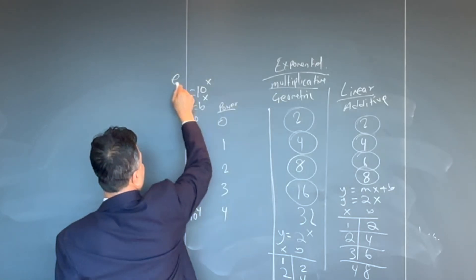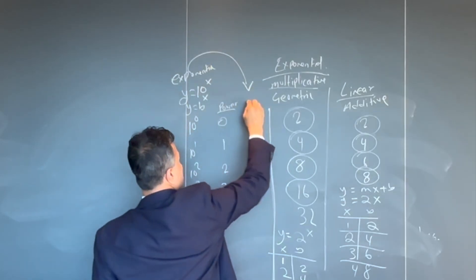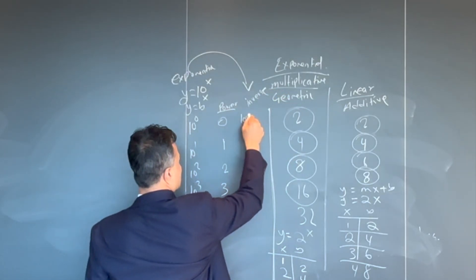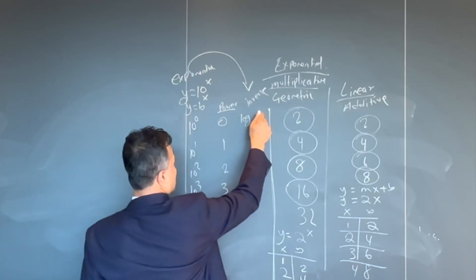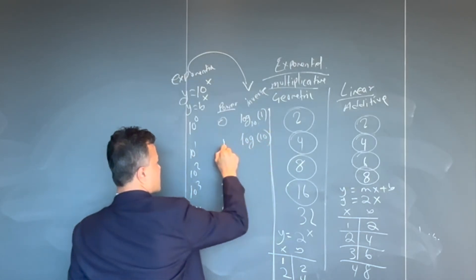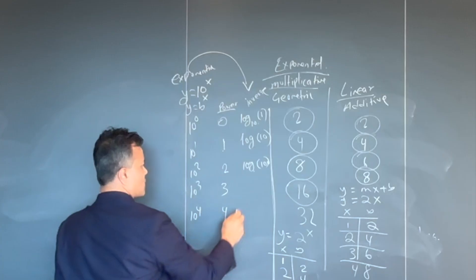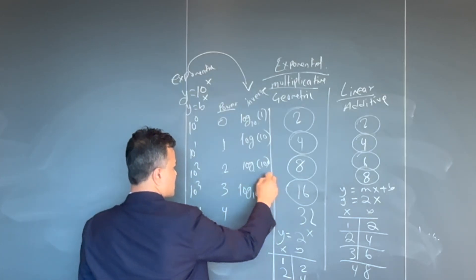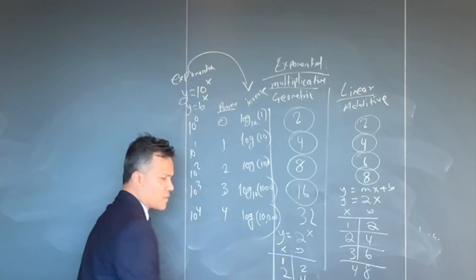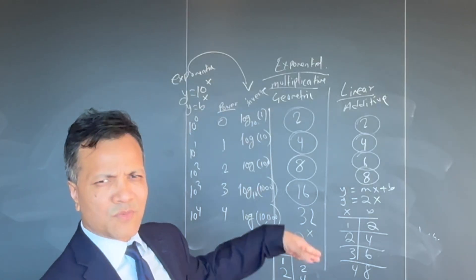Now, if this is exponential, what is the inverse of exponential? The inverse of exponential would be log — log base 10. Log base 10 of 1 is 0. Log base 10 of 10 is 1. Log base 10 of 100 is 2. Log base 10 of 1000 is 3. Log base 10 of 10000 is 4. So you discover that the inverse of exponential is logarithm, and logarithm is linear.